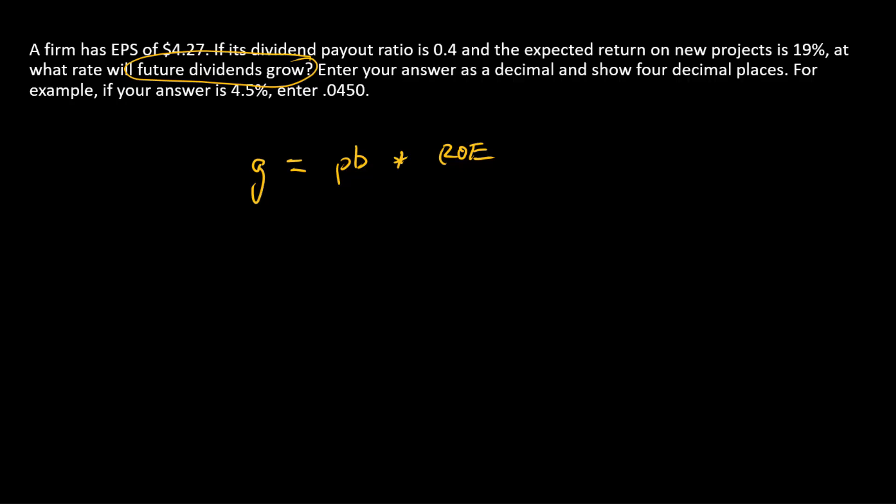Translating this into the problem: plowback ratio is the fraction of earnings that are reinvested, and it's also one minus payout ratio.